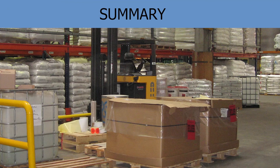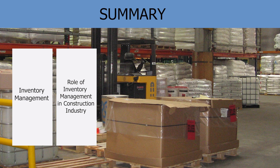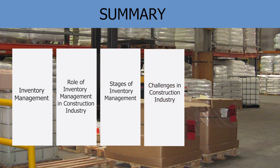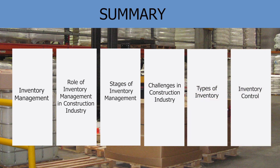In this session, we have covered what inventory management is, the role of inventory management for the construction industry, the stages of inventory management, the challenges in the construction industry, and the various types of inventory and inventory control — including raw material inventory, semi-finished inventory, and tool inventory. Different types of inventory control mechanisms have also been provided, such as perpetual inventory control and ABC control. I hope you have enjoyed and learned a lot from this session. In case of any doubt, please refer to the reference books mentioned. Thank you.